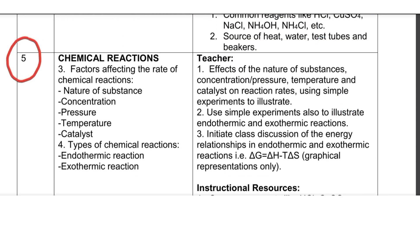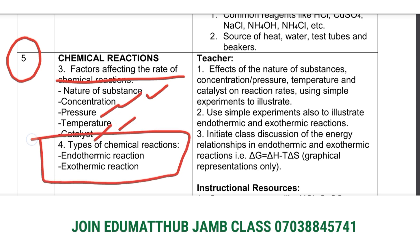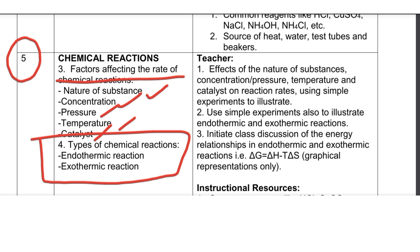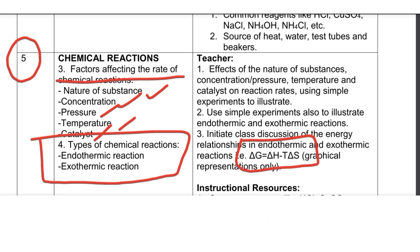For week five, you'll learn about chemical reactions again — specifically the factors affecting or influencing chemical reactions, including the nature of the substance, concentration, pressure, temperature, and the addition of catalysts. You'll also learn about the types of chemical reactions: endothermic and exothermic reactions. You'll also learn a very important formula to help you determine the free energy of a system, which JAMB often sets questions on, so pay close attention.